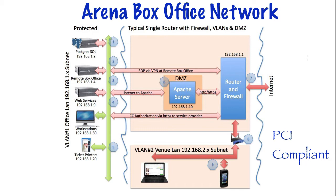The example here shows an actual working network for a community arena that has a box office and sells reserved seating for various events. The main components are the Apache web server, through which patrons buy tickets online, and a web listener which acts as a go-between between the Apache server and a database that keeps track of all the tickets to all the events. The online patron interacts only with the Apache web server and can select seats and purchase tickets by using their credit card.